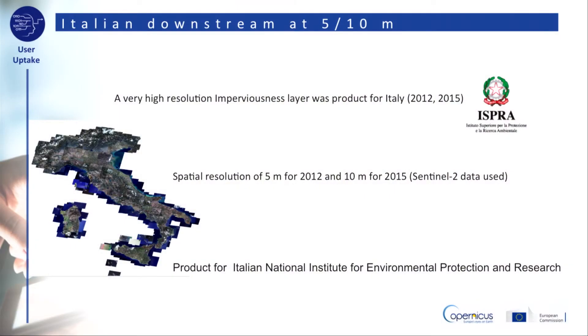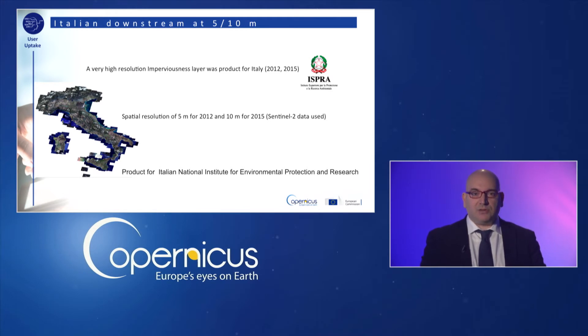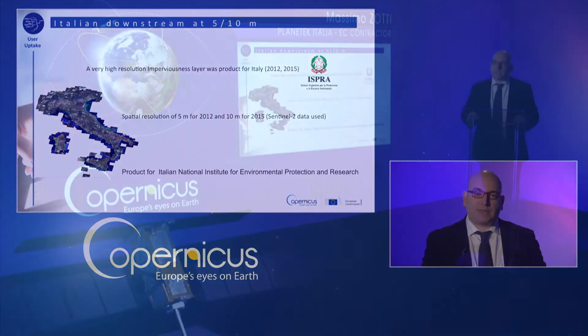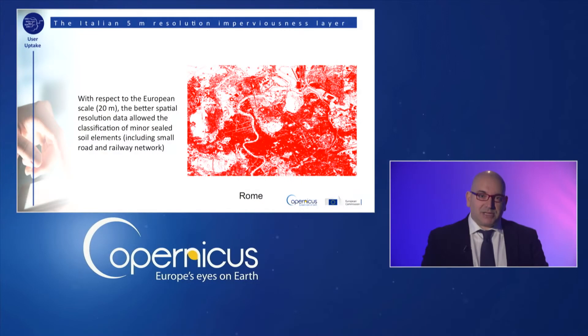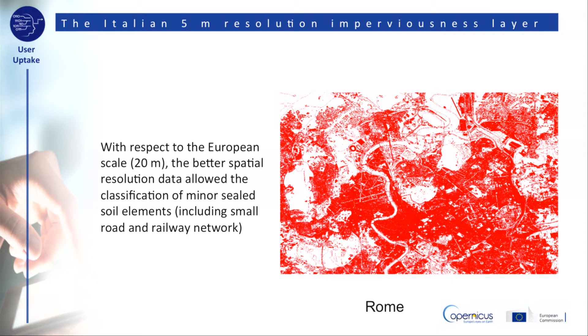Use case 1. The imperviousness layer of Copernicus Land Monitoring Service has been used to derive for Italy a very high resolution version of the same layer with a spatial resolution of 5 meters. This layer has been updated for the 2015 reference year using the Sentinel-2 images. The new layer has a 10 meter spatial resolution. Both data have been produced for the Italian National Institute for Environmental Protection and Research. The better spatial resolution allows the mapping of minor impervious soil elements, such as small houses, minor roads and railway networks. An example taken in the central areas of Rome is shown.